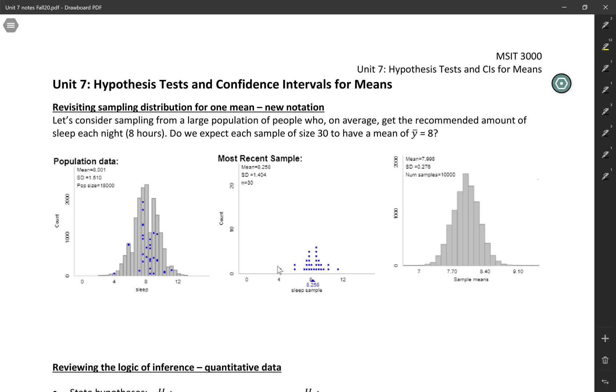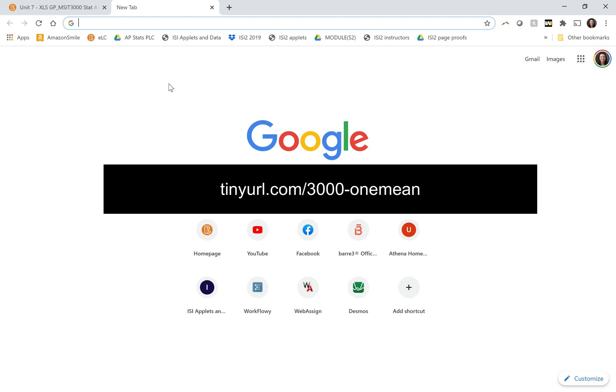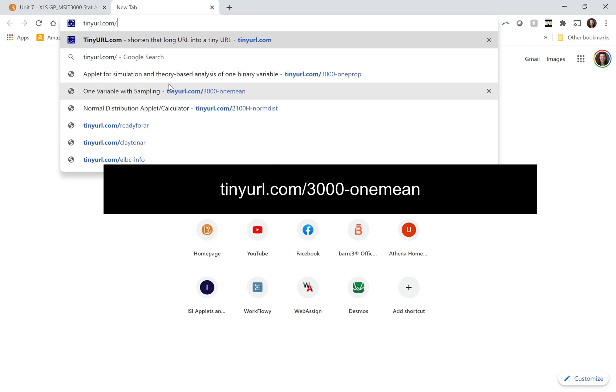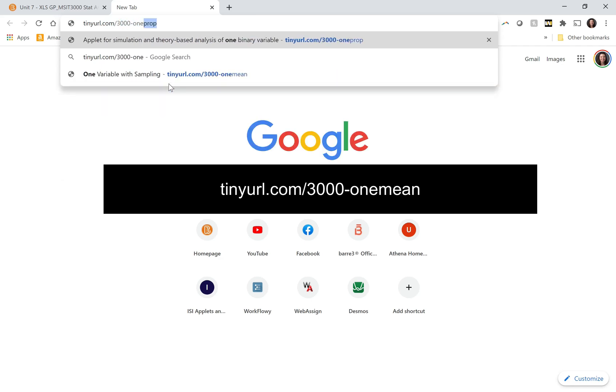In this video, we're going to revisit the sampling distribution for one mean, but we're going to formalize it a little bit with some new notation. There's a tiny URL for the applet we're going to use today. It's tinyurl.com slash 3000 dash one mean, since we're dealing with quantitative data now.